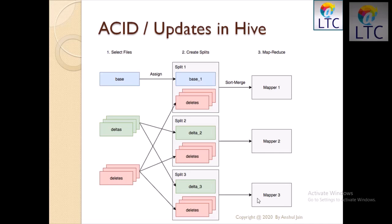In this lecture I'm going to tell you about ACID properties in Hive — how Hive handles delete and update operations. The main thing is Hive keeps all its data in a single file and uses bucketing. Whenever we do any changes in records — for example, if a table contains 100 records — and you run an update or delete query, a delta file gets created for update and another delta file gets created for delete. As per your operations, these delta files and delete files keep on creating.